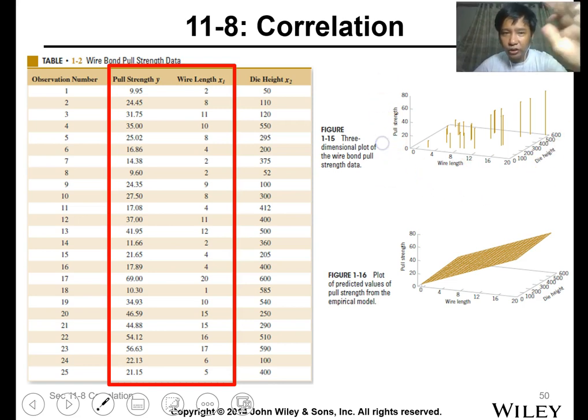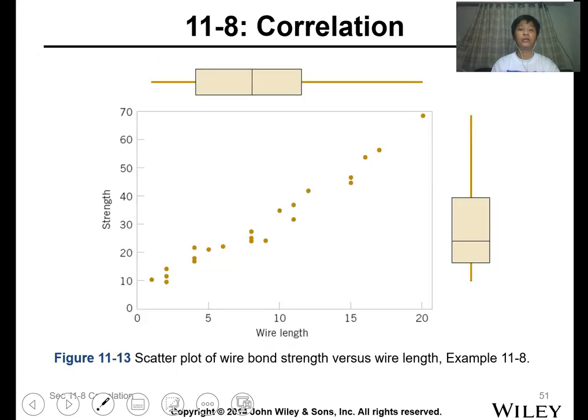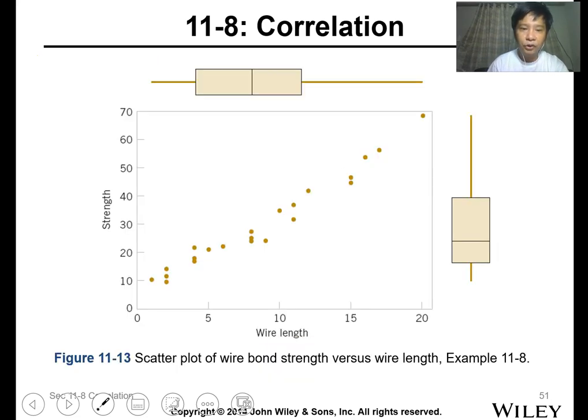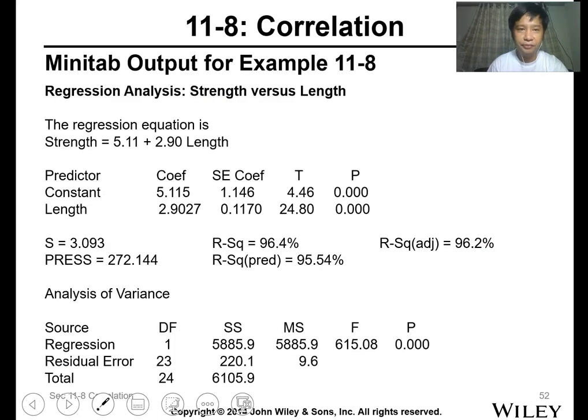This is the data. So when you get the data, we have the wire length and the pull strength. Pull strength, this is it. So we'll just get this one, the impact of X1 on pull strength. Later, we will have this example for the multi-regression analysis. So this is the wire length, this is the pull strength.